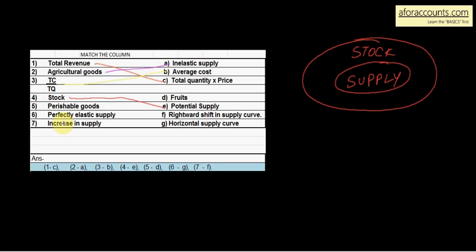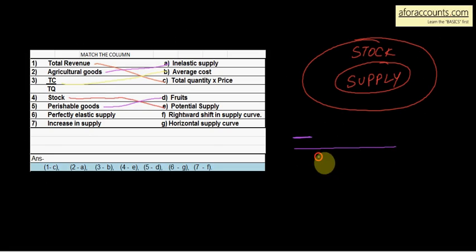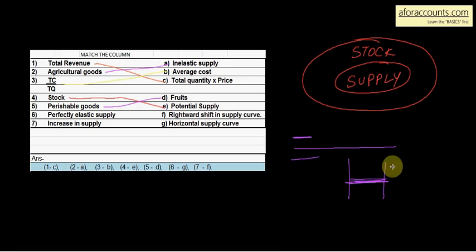Perishable goods — perishable goods जो जल्दी से सड़ जाएं, जैसे fruits. Perfectly elastic supply — elastic rubber band सोचो, जो कि पूरा अच्छे से stretch हो और वापस कम भी हो जाए। Shape ऐसा आता है जैसे rubber band की बीच की line। And याद रखो: horizontal supply curve. So perfectly elastic supply is a horizontal supply curve. 6th का answer G.